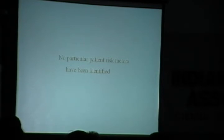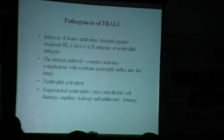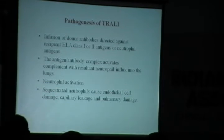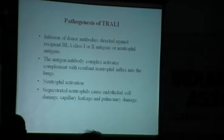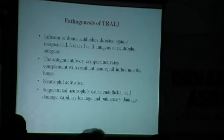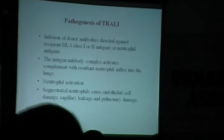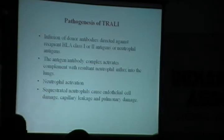No particular patient risk factors have been identified to predict who will develop TRALI. Regarding pathogenesis: the donor antibodies act against recipient antigens, and the antigen-antibody complex activates complement, with subsequent neutrophil influx into the lungs. There is neutrophil activation, and the sequestered neutrophils cause endothelial cell damage, capillary damage, and capillary leakage containing large amounts of albumin, resulting in pulmonary damage.